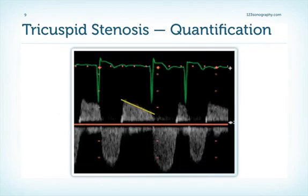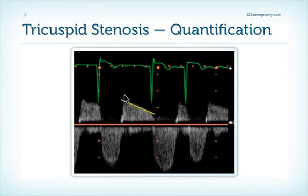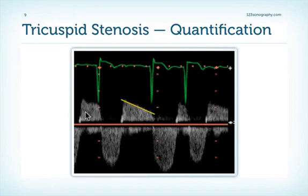So how do we quantify the severity of tricuspid stenosis? Very similar to how you quantify mitral stenosis — you look at the gradients. To do this, you perform pulsed-wave and/or continuous-wave Doppler across the tricuspid valve. Use color Doppler to guide your sample volumes, then record a tracing. You can look at the maximum velocity and calculate the maximal gradient. However, it is probably better to look at the mean gradient by tracing the entire curve, and also look at the pressure half-time — the steepness of the curve. Perform calculations over several beats, not just one, because you have fairly high fluctuations in velocity due to respiration.